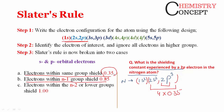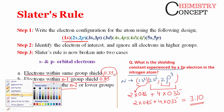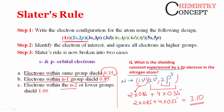Next, electrons in the n−1 group shield 0.85 each. The n−1 group is [1s²], which has 2 electrons, each contributing 0.85. There is no n−2 group for nitrogen. So the shielding constant is: (2 × 0.85) + (4 × 0.35) = 1.70 + 1.40 = 3.10.